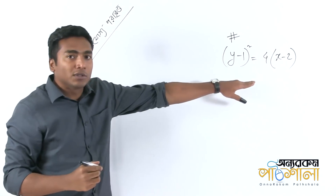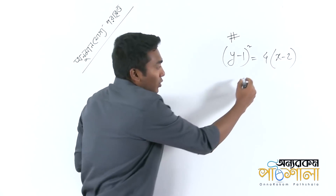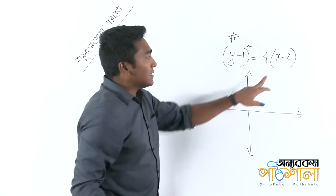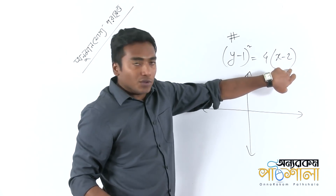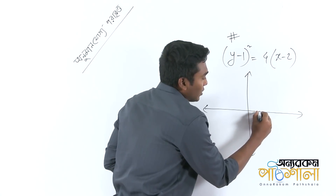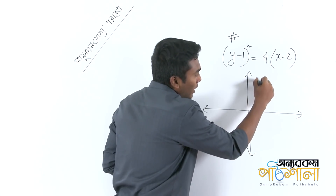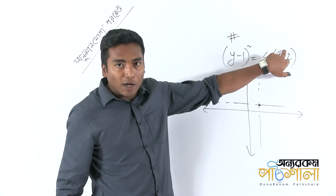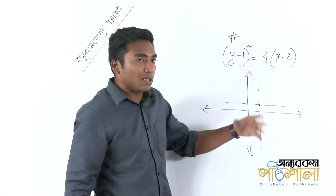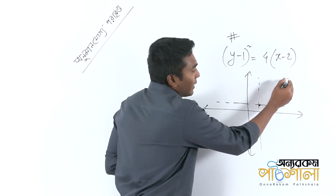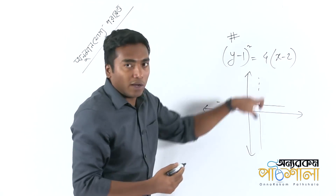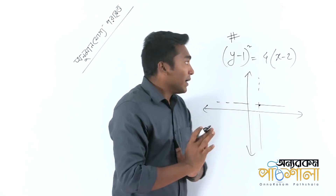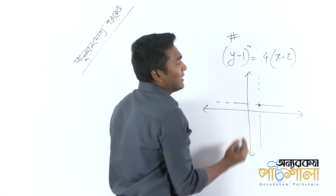This is the same equation. Recall that the first values are 2 and 1. y minus 1 squared equals 4x minus 1. y minus 2 squared is equal to 6. The question is based on this example.